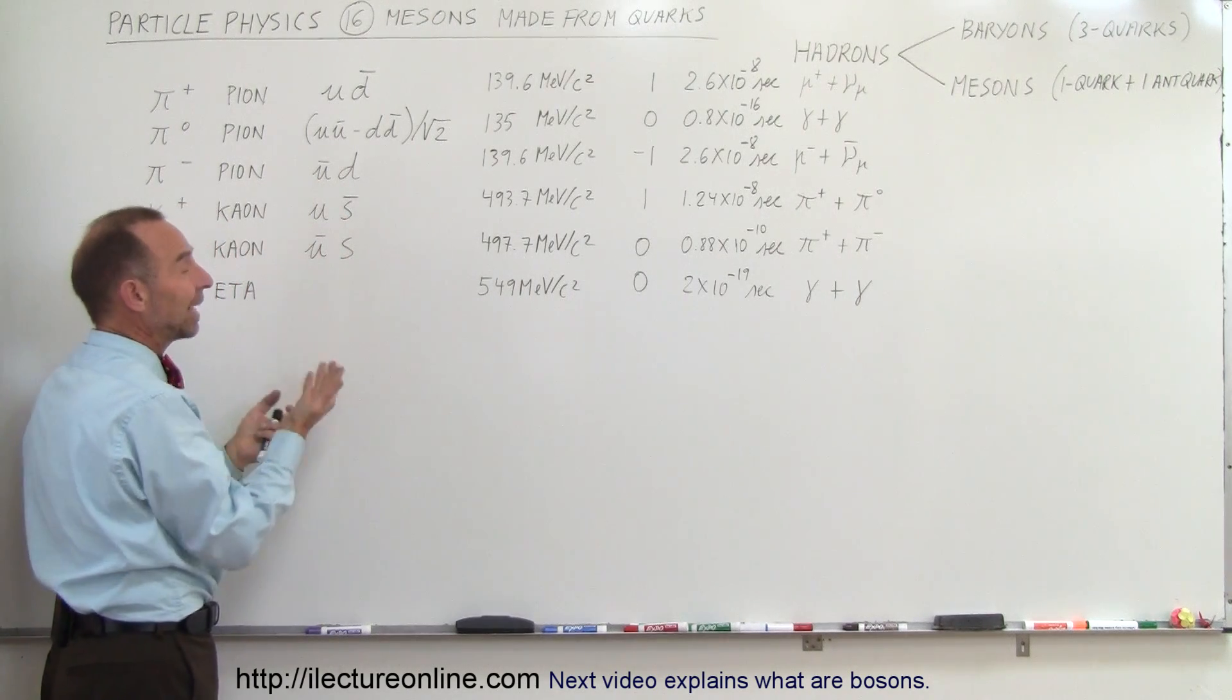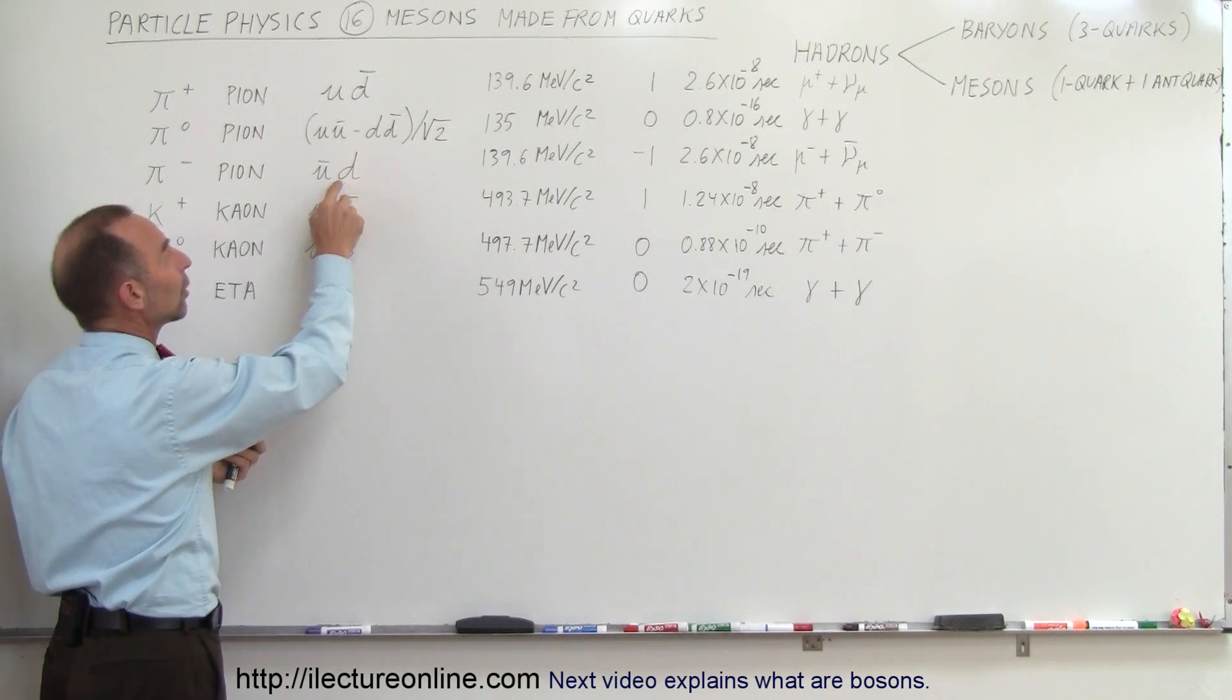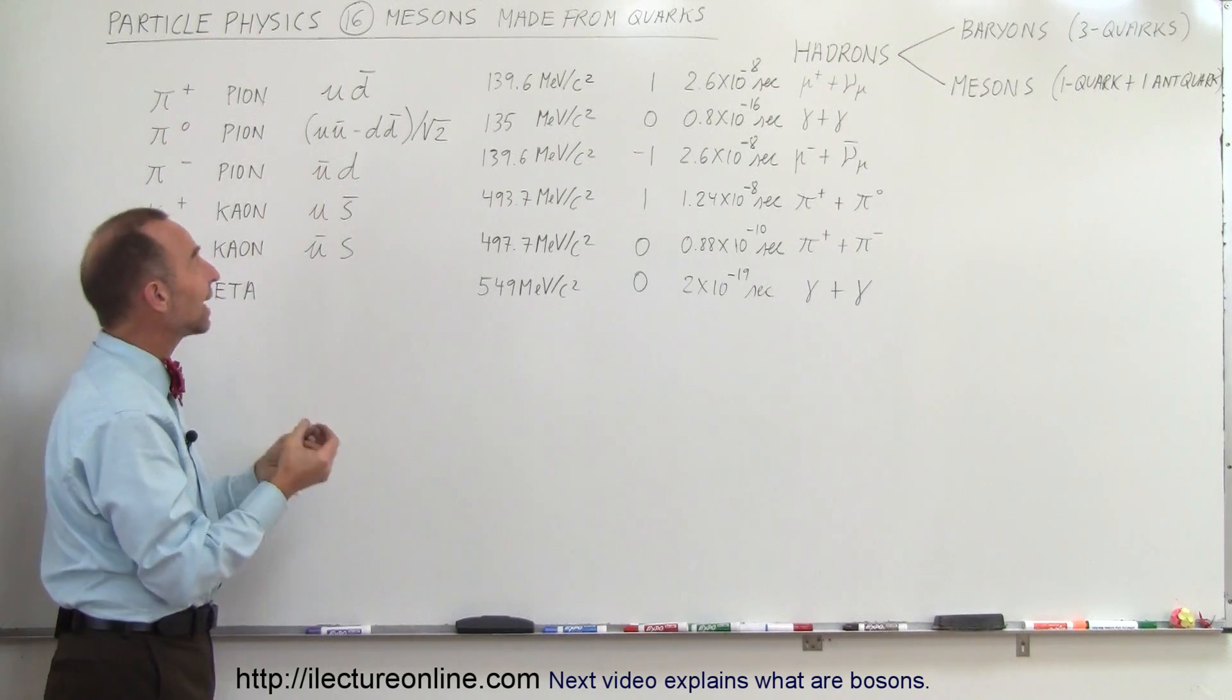But a negative up quark, or I should say an anti-up quark, is a negative two-thirds charge, and a down quark is minus one-third, so together, that gives you a minus one charge.